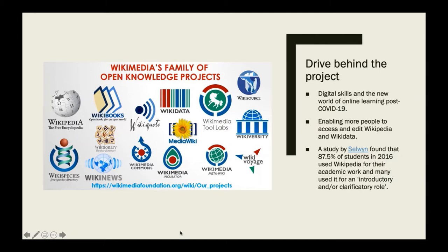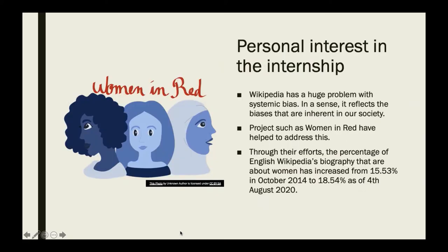These statistics show how important Wikipedia is for people as a source of information during a global pandemic. I also attended sessions run by Women in STEM, whose aim it is to edit, improve or add articles about female scientists on Wikipedia. Wikipedia also has an issue with much of its information being dominated by the global north, so the sessions for Women in STEM also looked at improving or adding articles about female scientists from the global south.